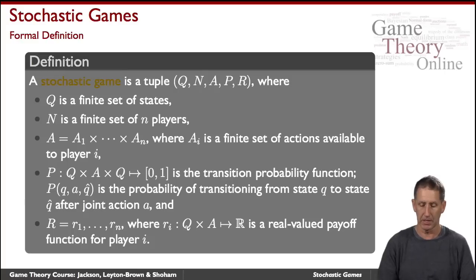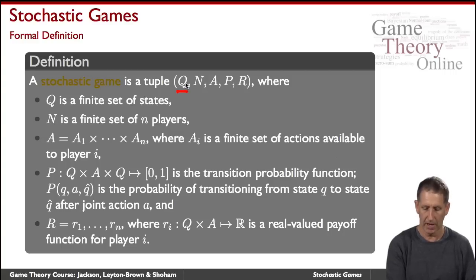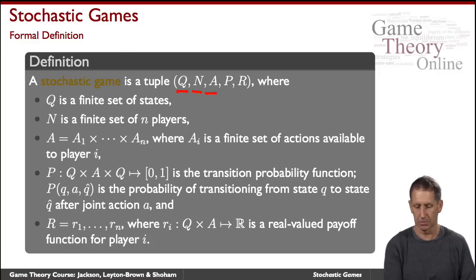Formally speaking, a stochastic game is defined by the following tuple. It involves a lot of notation, but the concept is exactly what we described. We have a finite set of states Q, a set of players, and a set of actions where A sub i is the set of actions available to player i.